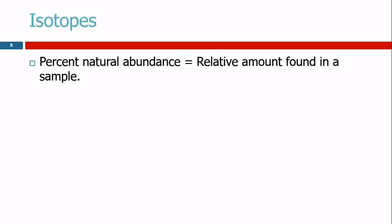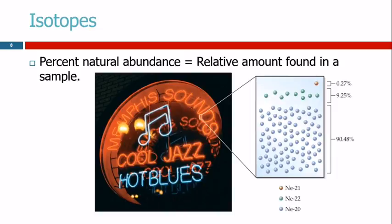So for different isotopes, we have what's called a percent natural abundance, and that's the relative amount found in a sample. This slide looks like, oh, there was an animation there. I didn't put that in, but there it is.